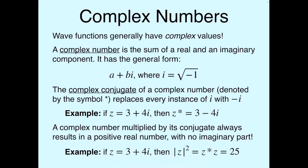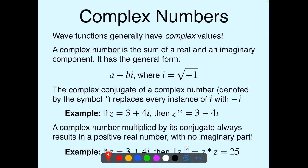We also have something called the complex conjugate, which we need to know about. The complex conjugate of a complex number replaces every instance of i with minus i — that's all it is. So anytime you see the number i, just tack a negative sign onto it. For example, if we have Z equals 3 plus 4i, then Z star, which denotes the complex conjugate, is just 3 minus 4i. We leave the real part alone, but flip the sign on the imaginary part.